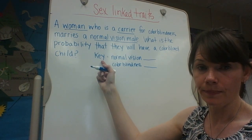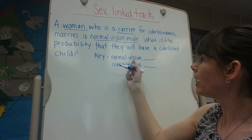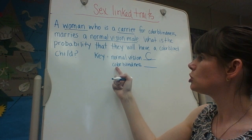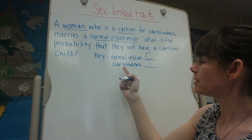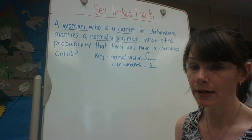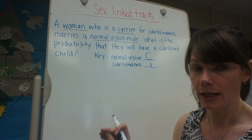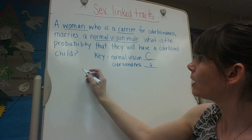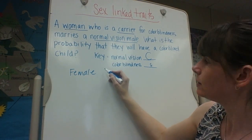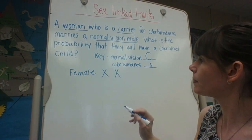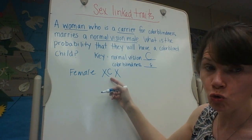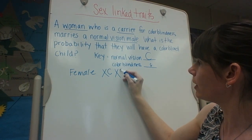We need to make our key. If you have normal vision, you're going to have the dominant allele, represented with a capital C. If you show colorblindness, which is a recessive sex-linked trait, you're going to have lowercase c. When we write our lowercase letters, we put a small line underneath to differentiate between uppercase and lowercase. So our female is a carrier: she has a big C, indicating normal vision, but also a little c, meaning she carries the disorder and could pass it on.